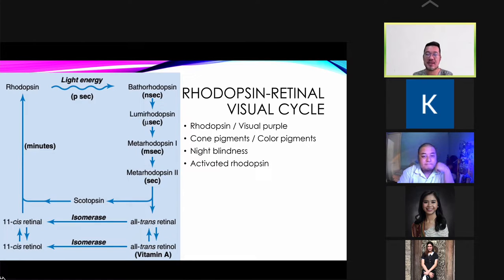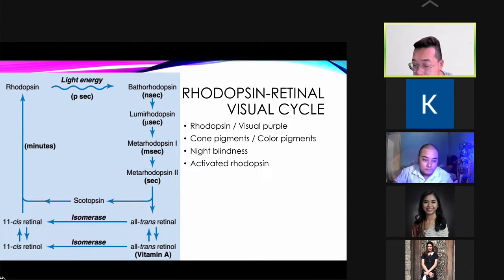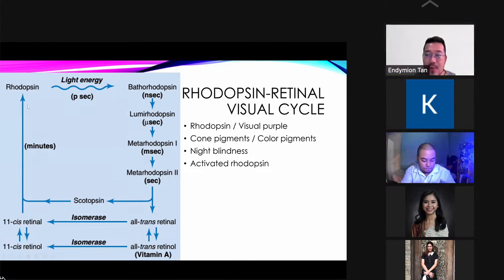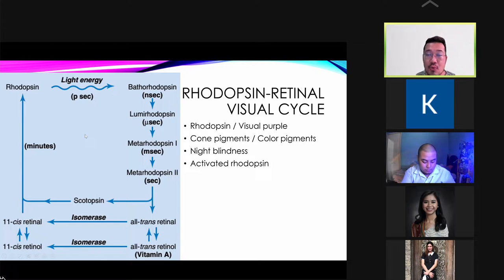Let's talk about the rhodopsin retinal visual cycle. The stimulus for vision is light. In the presence of light energy, rhodopsin — used for dark or black and white vision, also known as visual purple — is broken down into its final products: retinal and scotopsin. For color vision, the chemical involved is the cone pigments or color pigments.